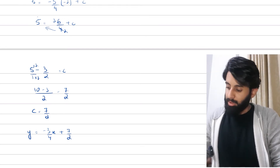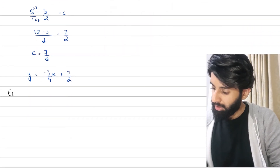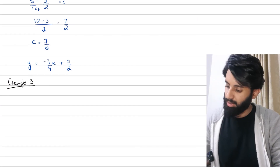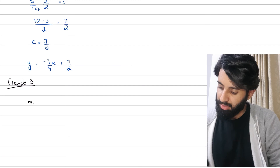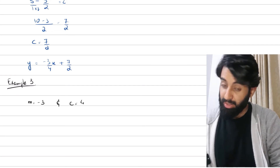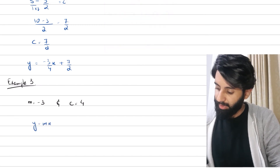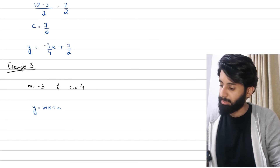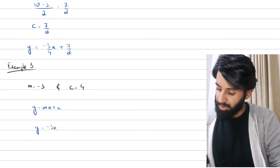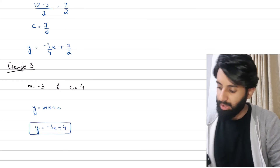The third possibility — which happens very rarely — is that you are given the gradient and the y-intercept directly. In this case you can simply plug in the value of m and the value of c straight away. For example, y = −3x + 4, and that's it. But like I said, this rarely happens.